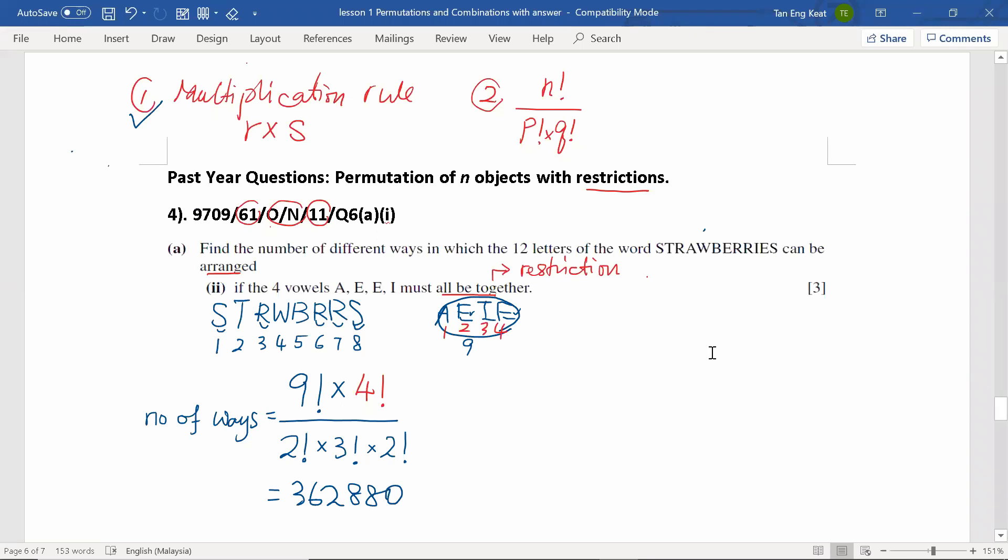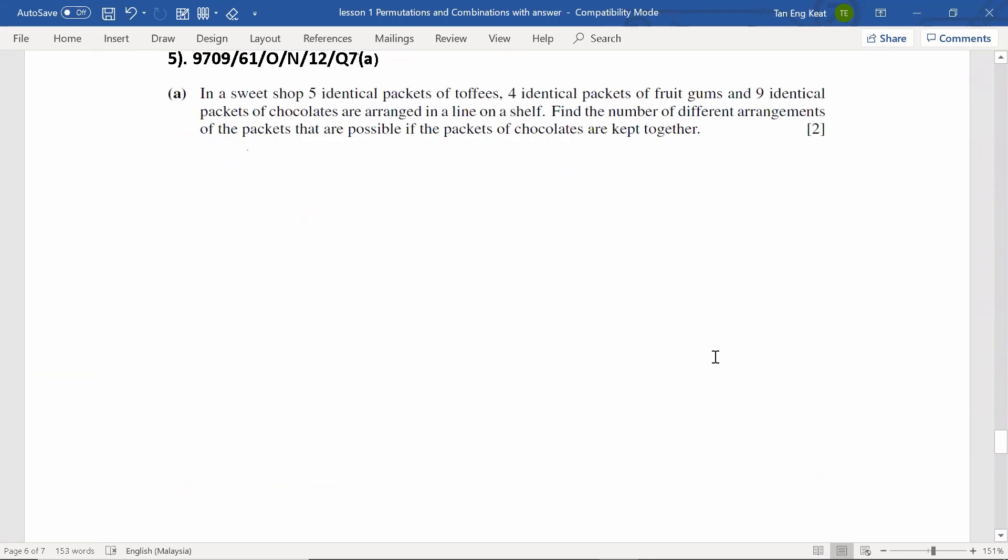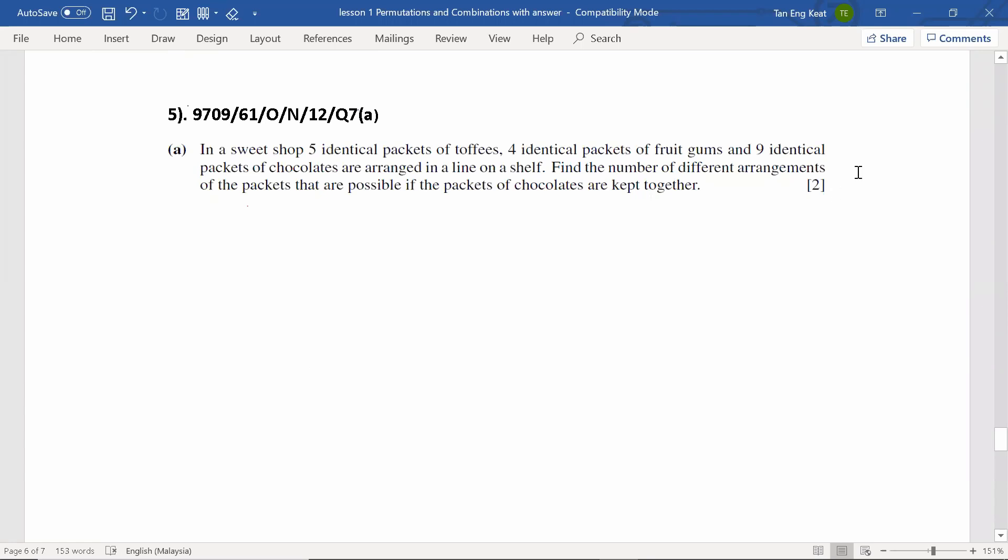Now, let's look at the next question. Question five. This is a question from 2012, October, November, Paper variant 61. In the sweet shop, five identical packets of toffee, four identical packets of fruit gums, and nine identical packets of chocolate are arranged in a line on the shelf. Find the number of different arrangements of the packets that are possible if the packets of chocolates are kept together. This is the restrictions.